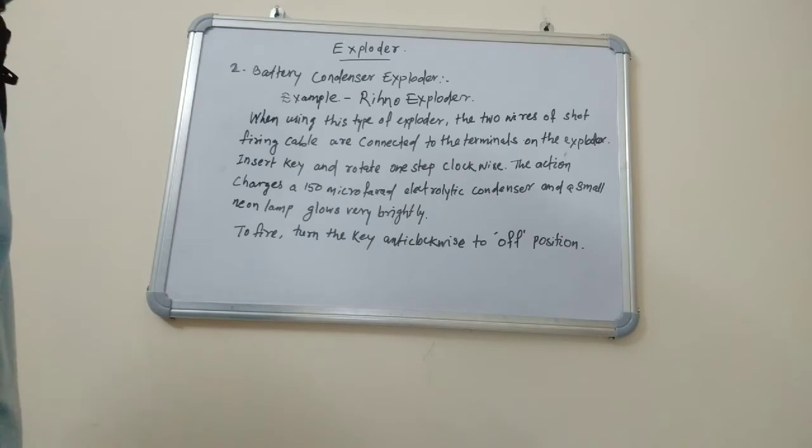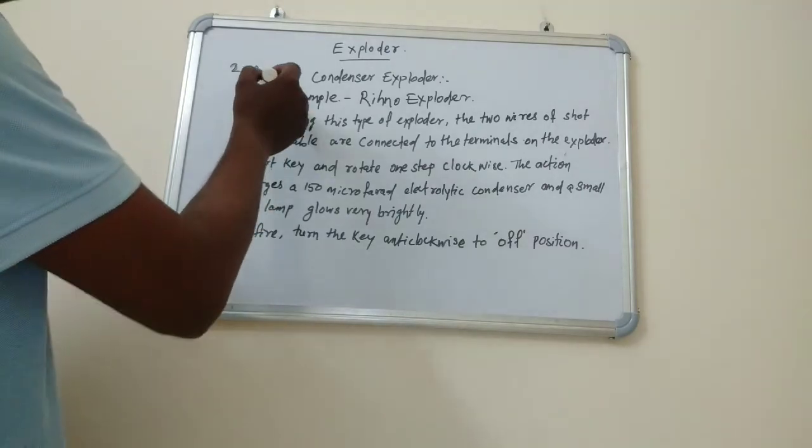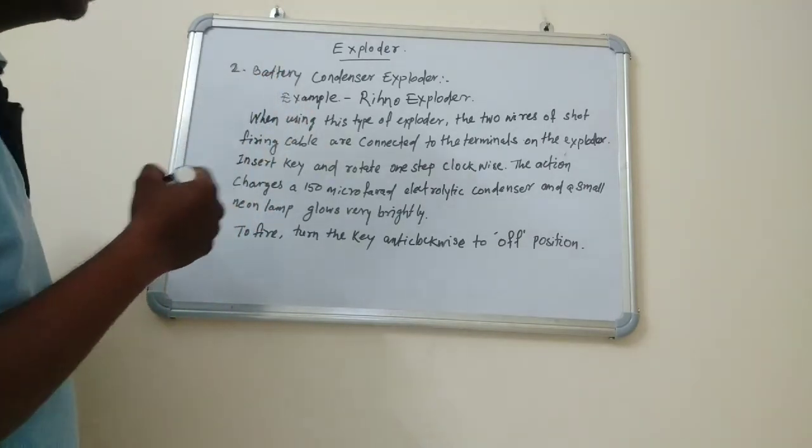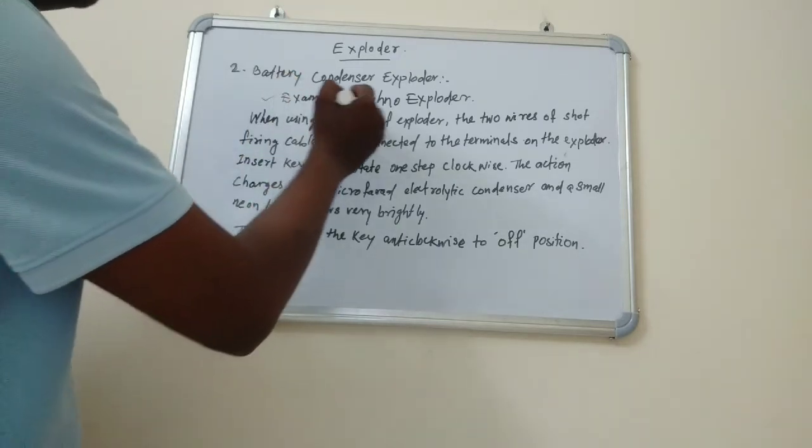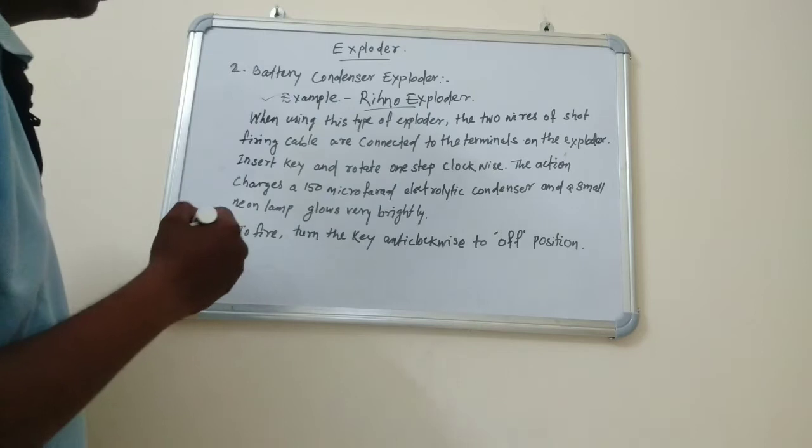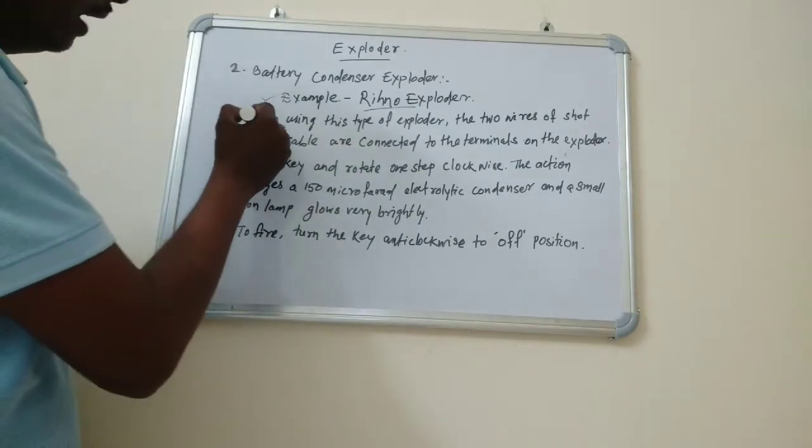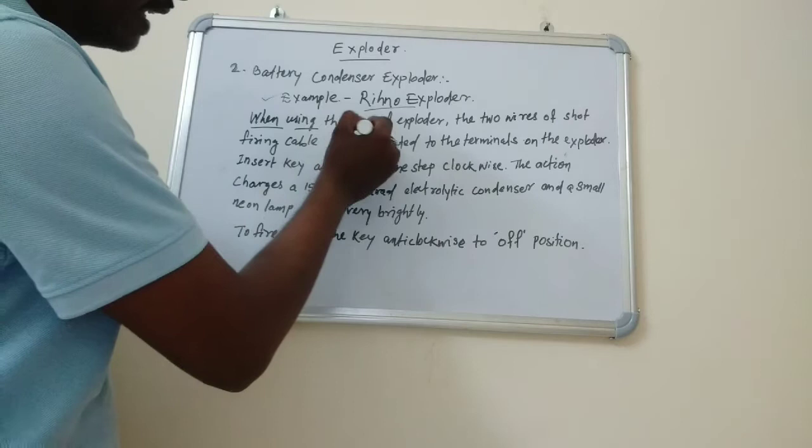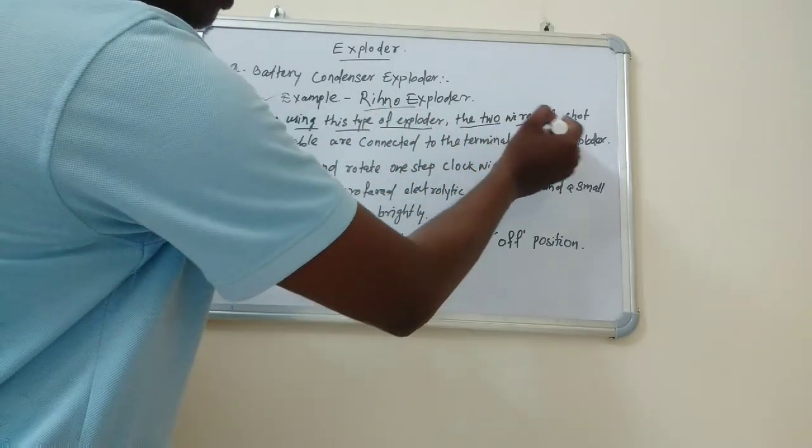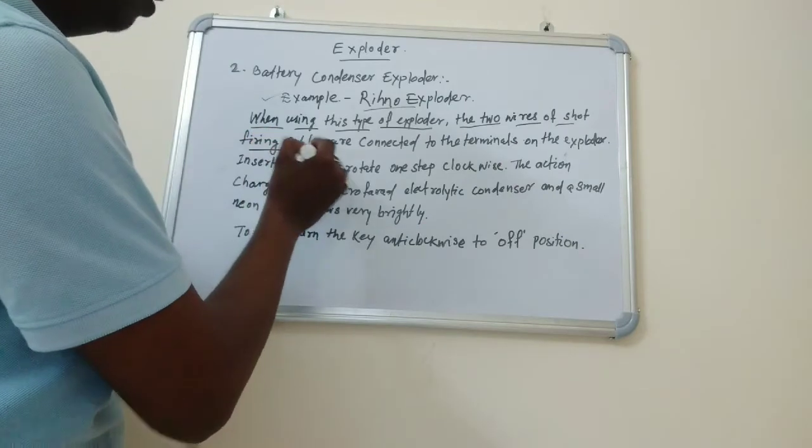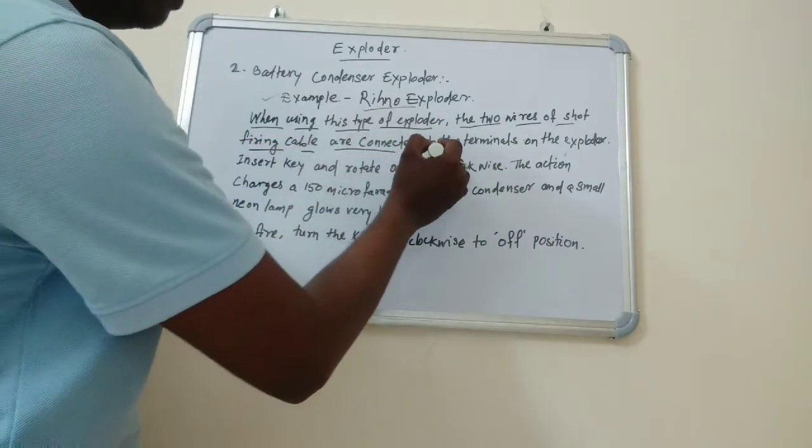In this type of condenser exploder, the two wires of the shot firing cable are connected to the terminals on the exploder. Insert the key and rotate one step clockwise. The action charges a 150 microfarad electrolytic condenser and a small neon lamp glows very bright.